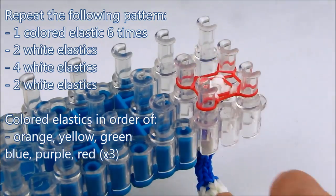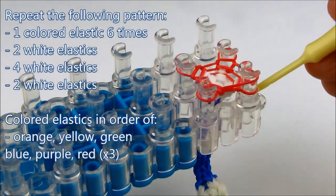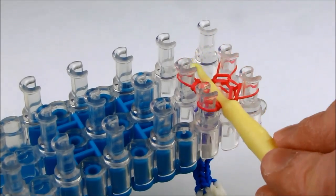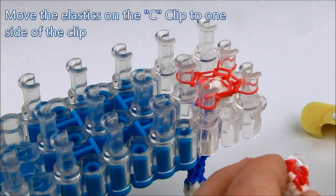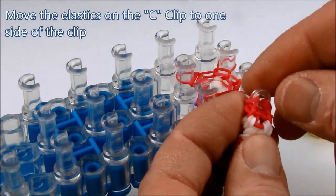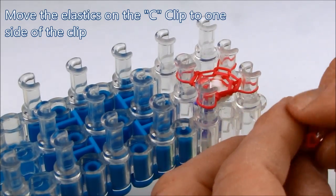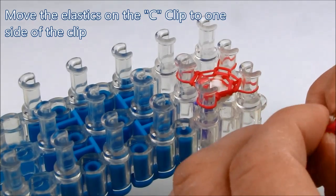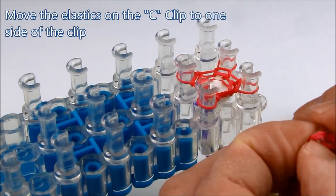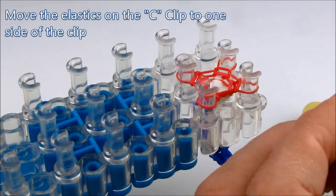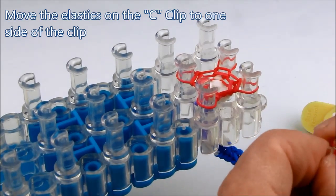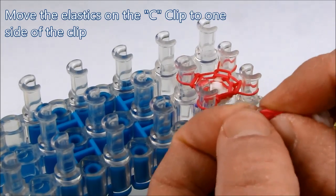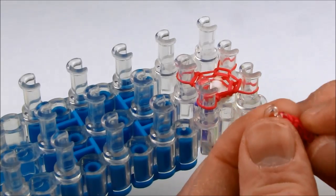Once we finish placing the last red elastic, we want to come to the other end of the pattern where the C-clip is located and gather all the elastics that are currently on the pattern to one side of the C-clip. So basically we're making room on the other side of the C-clip to grab the elastics that we're going to be feeding it right away. So here we have them all gathered to one side.